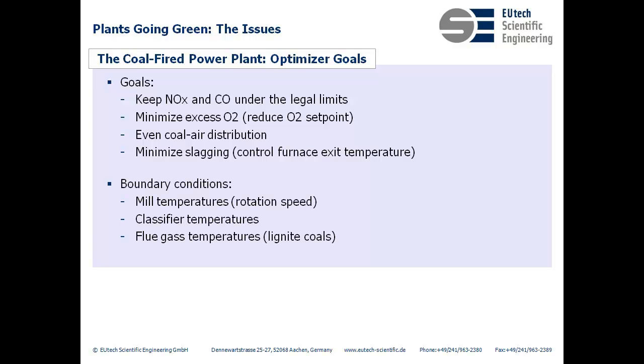If this is not complicated enough, the optimizer needs to maintain boundary conditions such as mill temperatures, classifier temperatures, and flue gas temperatures for lignite coals. If any of these boundary conditions are violated, then the optimizer needs to react accordingly.